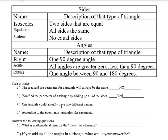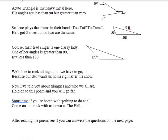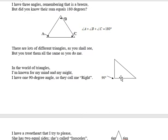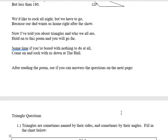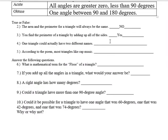One triangle could actually have two different names. That's true. You could have a right triangle that also has two sides that are equal. And if that's true, then it's an isosceles triangle, but it's also a right triangle. So that's completely true.